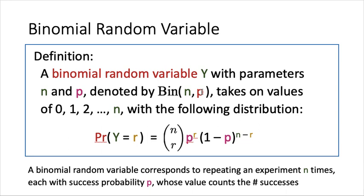The binomial random variable will take on integral values. So n is a positive integer. It takes on integral values of 0, 1, 2, 3, up to n. And it has the following distribution.